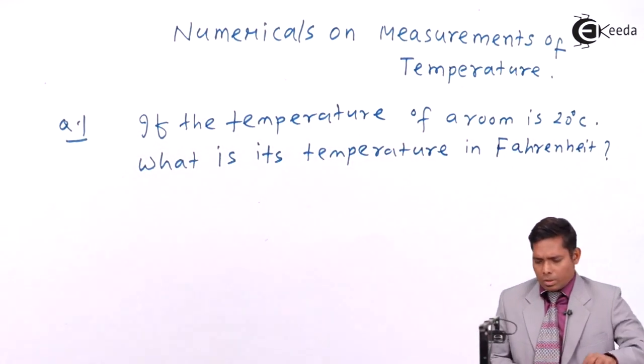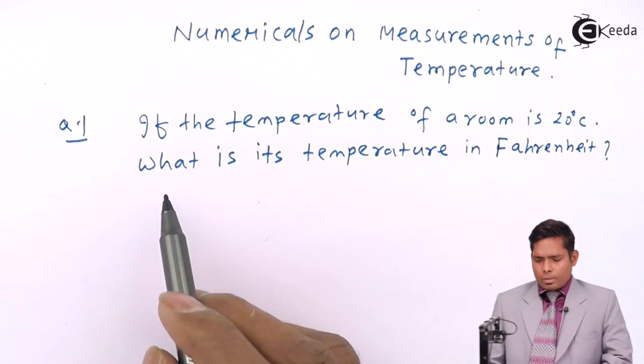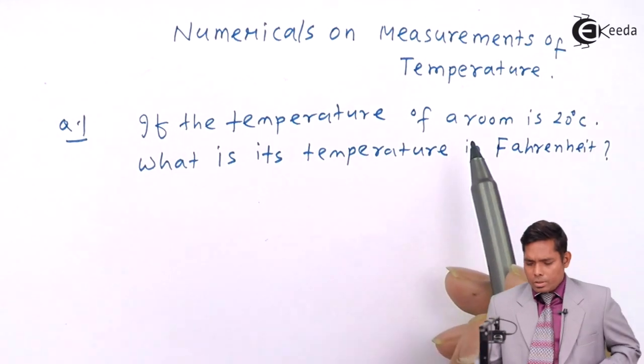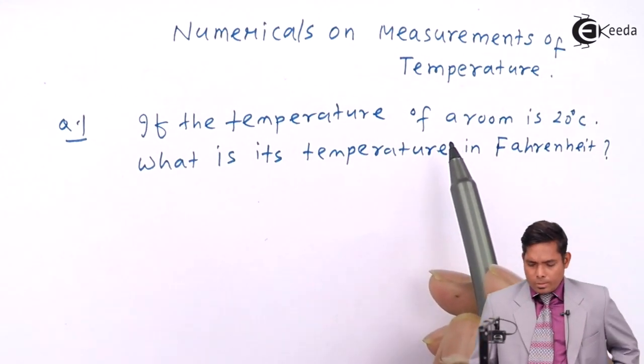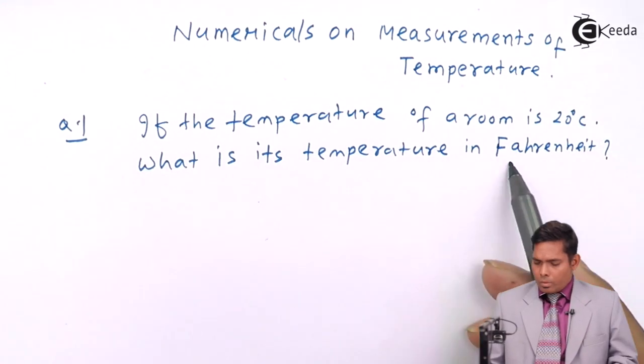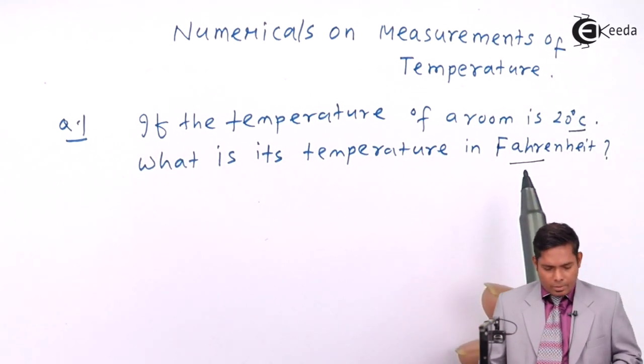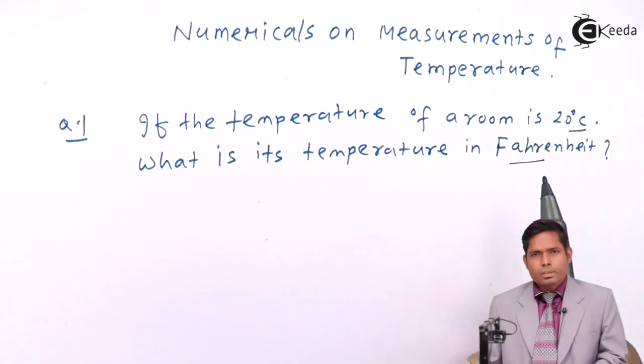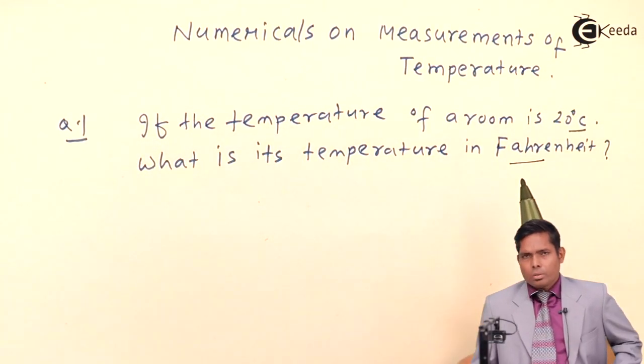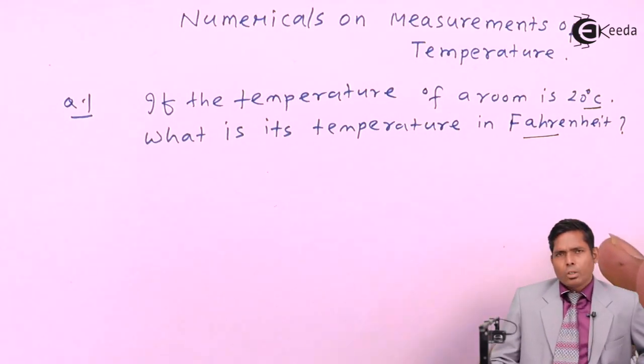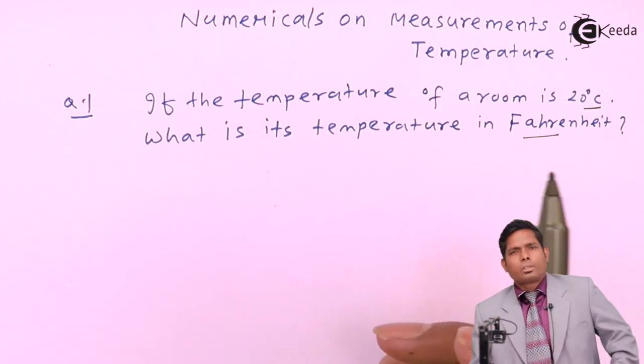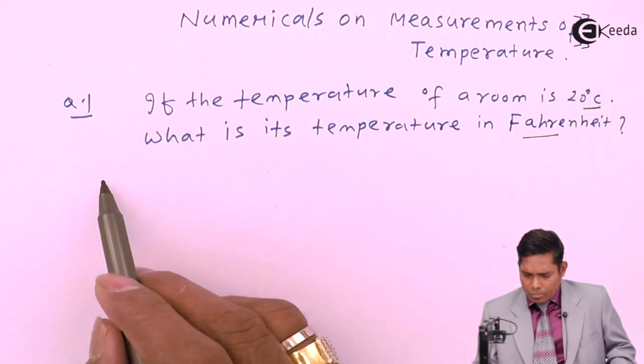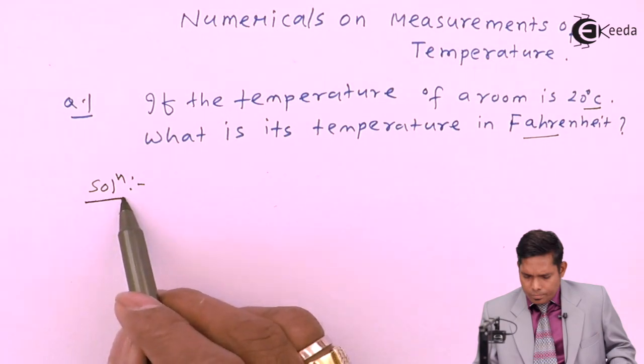Now let us solve the question. You have to use the general formula. You have to convert or have the relations between the Fahrenheit scale and the centigrade scale. The relation between the Fahrenheit scale and centigrade scale - I have to use the general formula that we discussed so far, which is a basic relation that relates all the temperature scales.